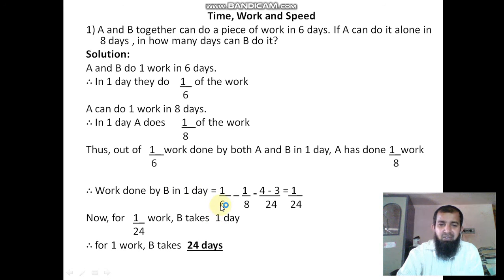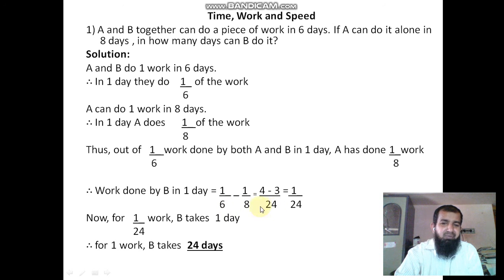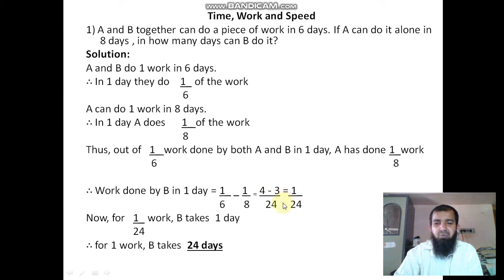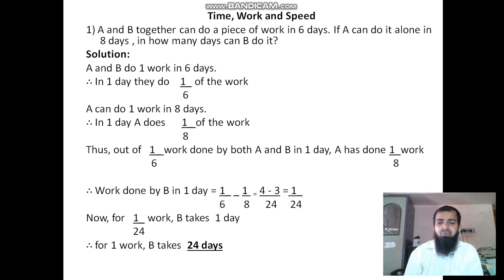So how to subtract? Find the LCM, which is the least common multiplier. The LCM of 6 and 8 is 24. So: 6 times 4 is 24, giving 4; and 8 times 3 is 24, giving 3. So 4 minus 3 is equal to 1, giving 1 divided by 24. Work done by B in one day is 1 by 24.